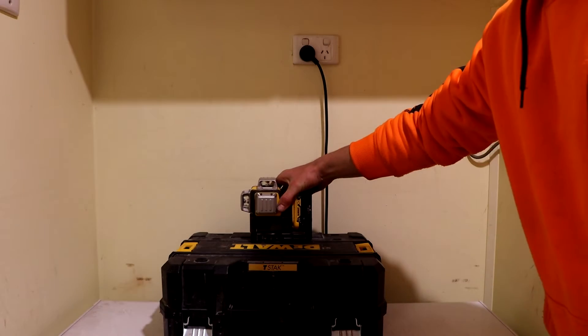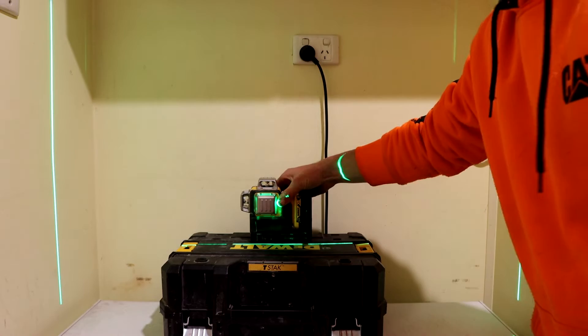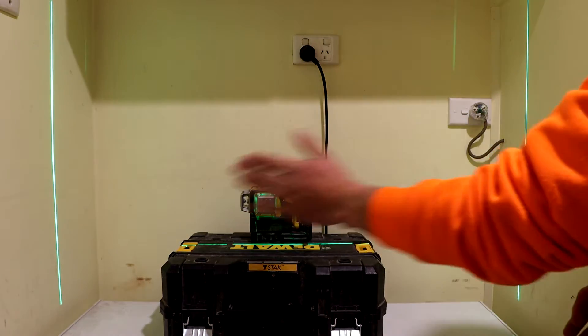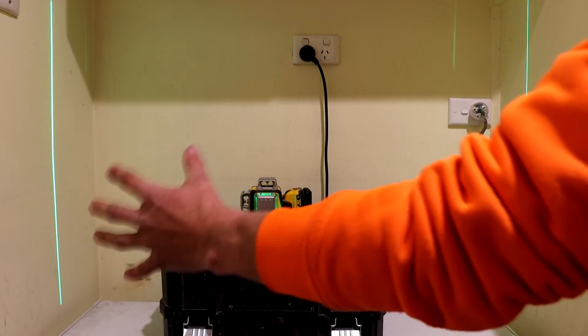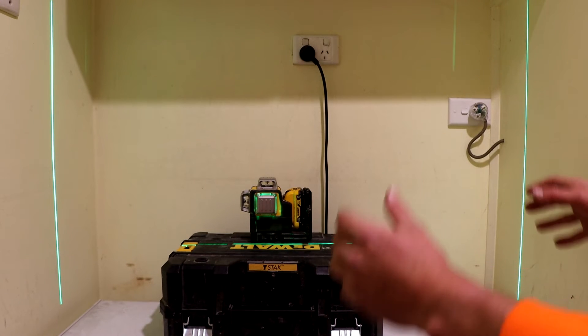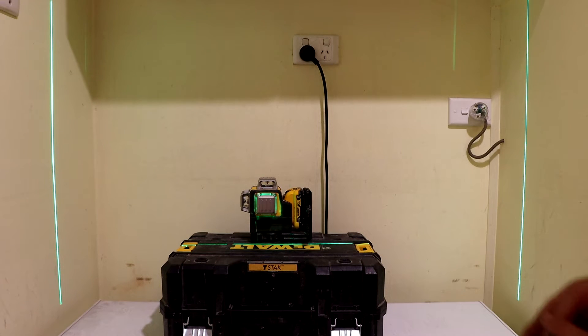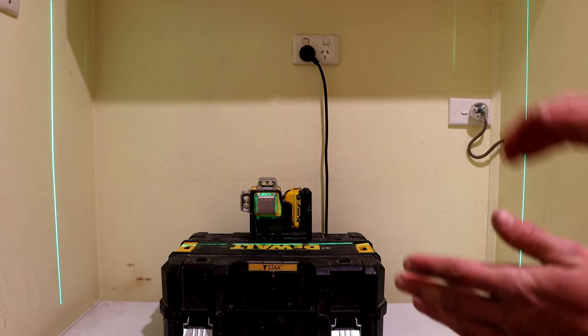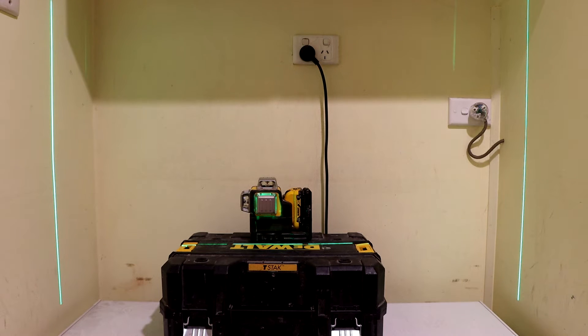Another way we can check this without using an additional level is by shining our laser between two walls like this. The wider the area you're measuring between is going to give you a more accurate reading of your laser level, so I'd recommend doing this method from one side of a room to the other. In this example, I'm just shining this laser within a meter so you can see the process on the camera.